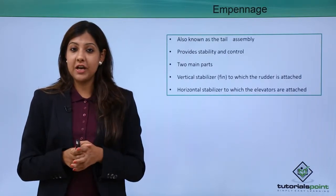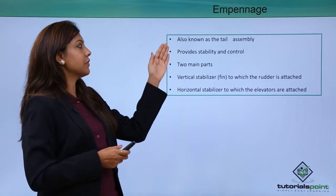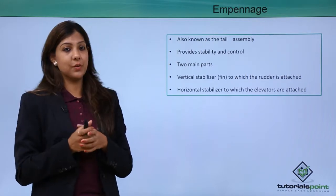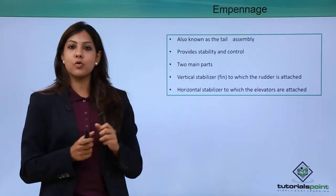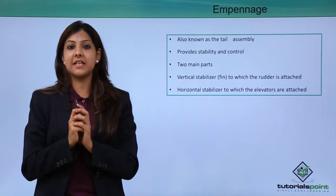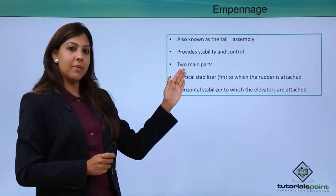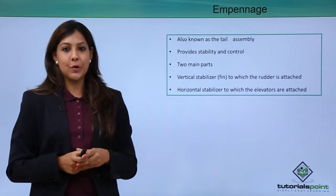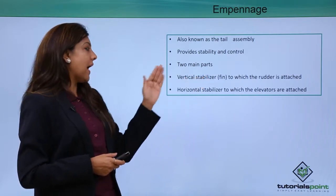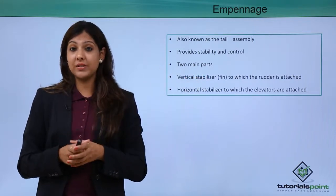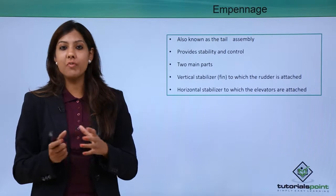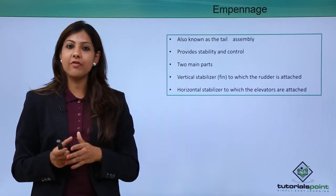Talking about the tail section of the aircraft, which is the empennage — also known as the tail assembly. The entire back part of the aircraft where the tail is located is known as the empennage. It provides stability and control; the entire aircraft's weight and body is held in place with the help of the empennage. It has two main parts: the vertical stabilizer, to which the rudder is attached, and the horizontal stabilizer, to which the elevators are attached. These elevators and rudders play a very important role in the left-to-right movement and yawing of the aircraft.